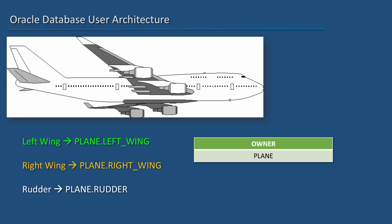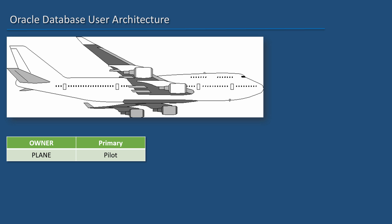The important thing is: who is the owner? Plane is the owner. Now let us see who has the rights to use those objects.